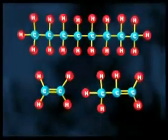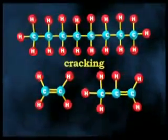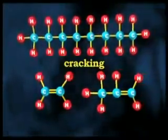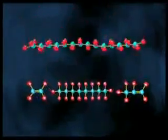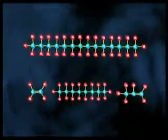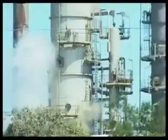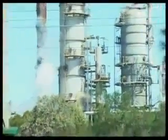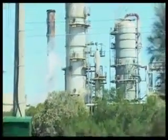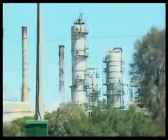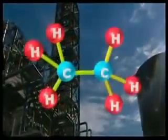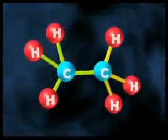A process called cracking is used to produce more of the lower molecular weight hydrocarbons. This process breaks up the longer chains into smaller ones. There are many different industrial versions of cracking, but all rely on heating. When heated, the particles move much more quickly and their rapid movement causes carbon-carbon bonds to break.